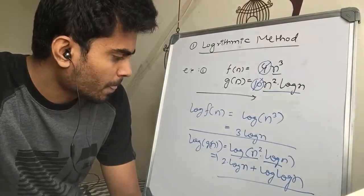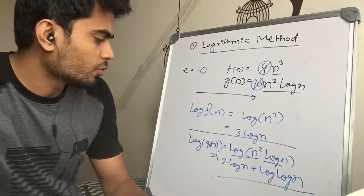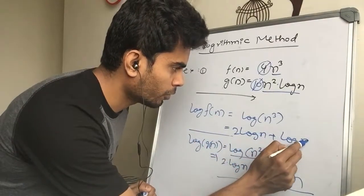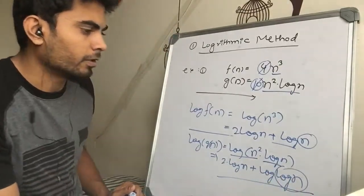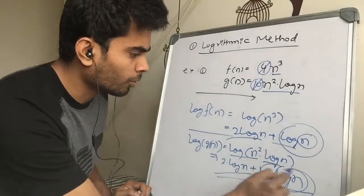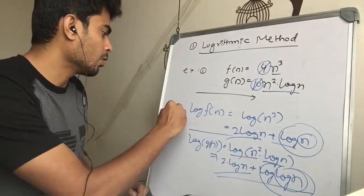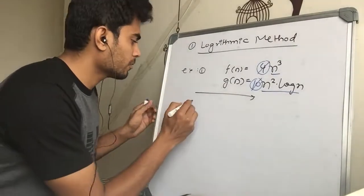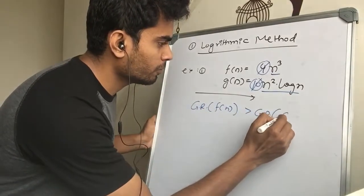So we have 3 log n for f(n) and 2 log n + log(log n) for g(n). We can rewrite 3 log n as 2 log n + log n. Since log n is obviously greater than log(log n), the extra term in f(n) dominates, meaning f(n) has the higher growth rate.